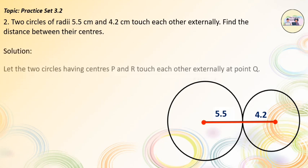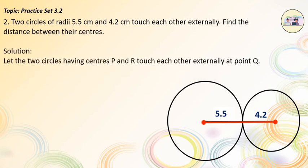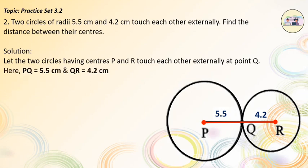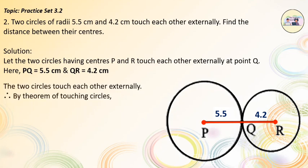Solution. Let the two circles having the centers P and R touch each other externally at point Q. Here, the radius of the first circle PQ is equal to 5.5 cm and the radius of the second circle QR is equal to 4.2 cm.